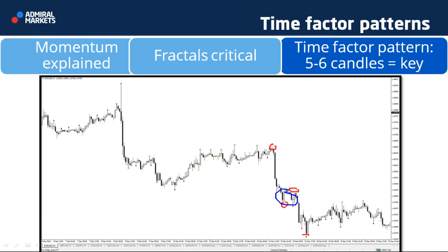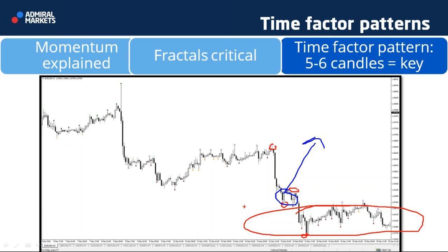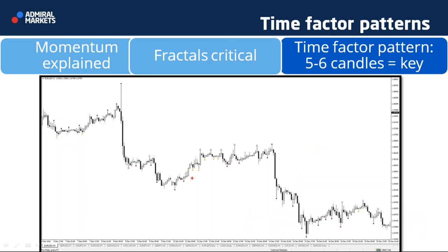Just because five to six candles appear that don't break a high or low doesn't mean the momentum or trend is necessarily over. What it does mean is that there's a good chance for a retracement or a reversal. For instance, here five to six candles gave us a bigger retracement. Depending on the overall market structure, I would then assess whether a correction or a reversal is more likely.